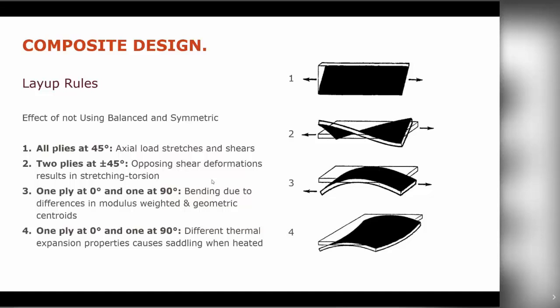That said, in particular fields of engineering, unbalanced or unsymmetric designs are actually desirable — for example, in aeroelastic tailoring, where the load imposed on a structure causes it to orient itself into the most optimized position. But those are very high-end applications. For the majority of engineering applications, you would tend to design symmetric and balanced laminates.